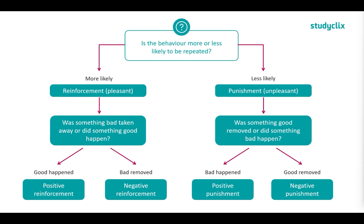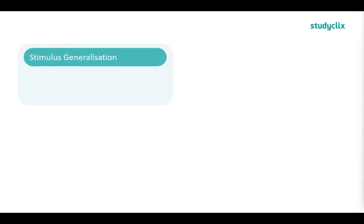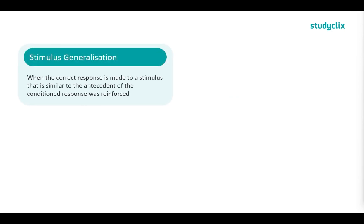Negative punishment is also called response cost because something is taken away — it is a cost to the learner. Now, stimulus generalization in operant conditioning is when the learner exhibits the correct behavior when the antecedent is similar to the conditioned one but not exactly the same. For example, the pigeon pecking in response to a purple light instead of a green light would be stimulus generalization, because they've generalized to a different stimulus.